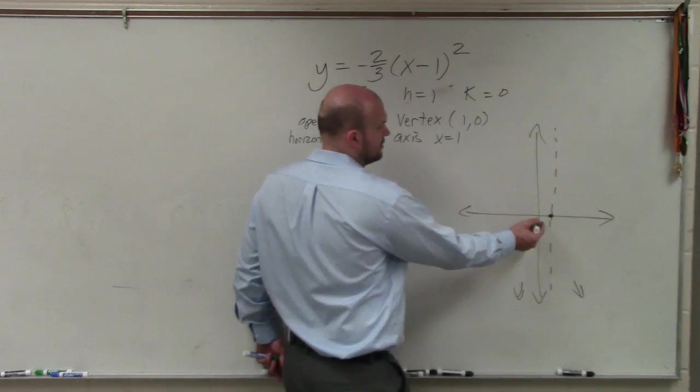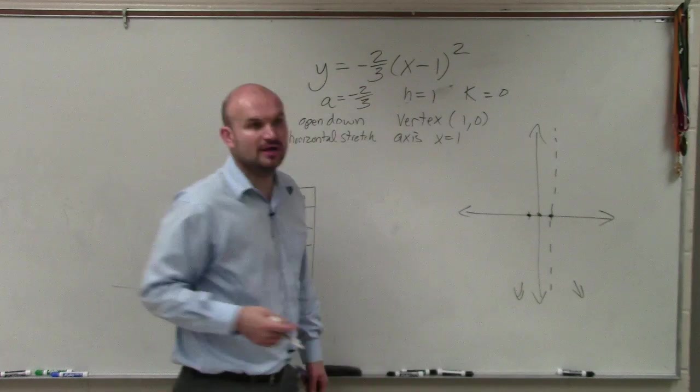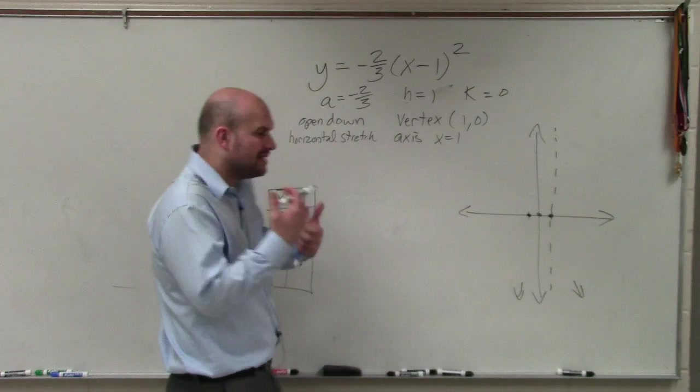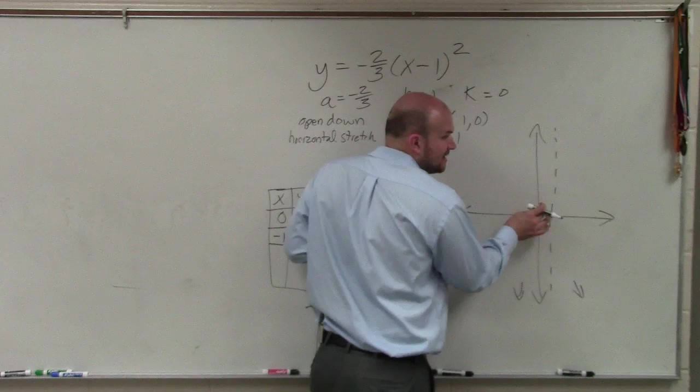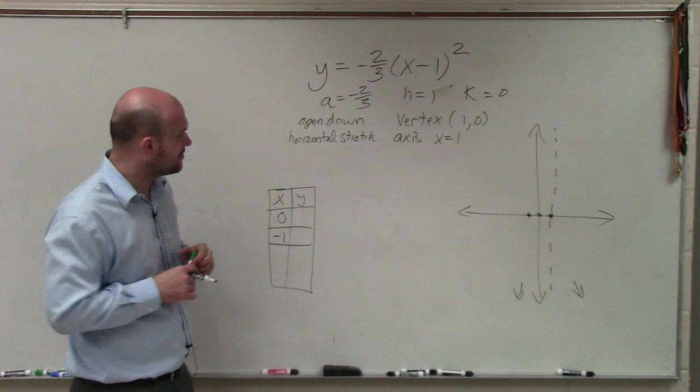So I'm just choosing two values. I'm choosing 0 and -1. If you want to choose two points on the right, you can choose two points on the right. It doesn't really matter which points you choose. But I think to make it easy is choose points that are close to the axis of symmetry and that are towards 0. Through my experiences, those are the best numbers to choose.